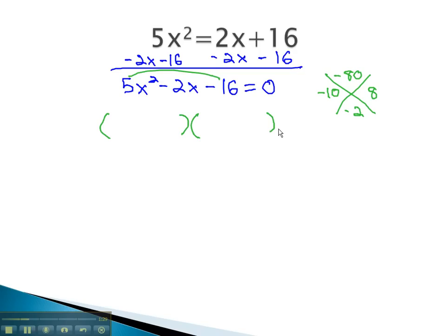Factoring our expression, to get the 5x squared, the only way to do so is 5x times x, which means 5x had to be multiplied by something to give us the negative 10, because 8 has no 5 factor. Clearly, we have negative 2. The x in the middle must have been multiplied by positive 8.